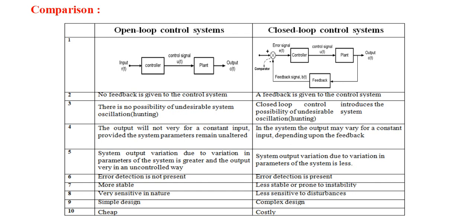In the closed loop block diagram there is input, output, controller, and plant. The new element is the error signal. From this point, the feedback signal is given to the input side. By comparing the input signal and the feedback signal, an error signal is produced and given to the controller for further processing.